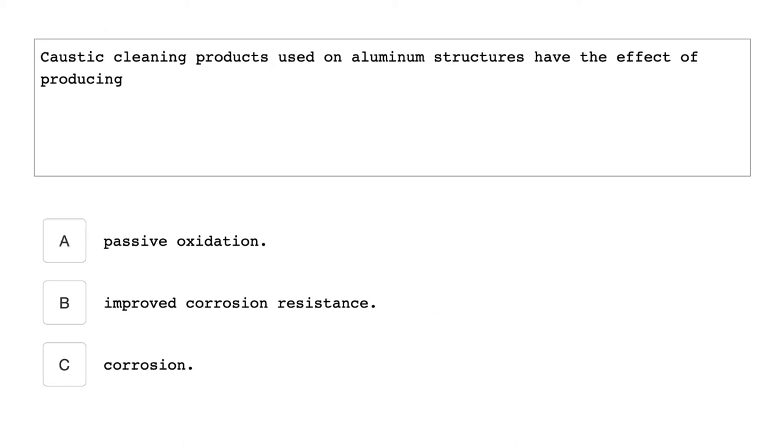Caustic cleaning products used on aluminum structures have the effect of producing corrosion.